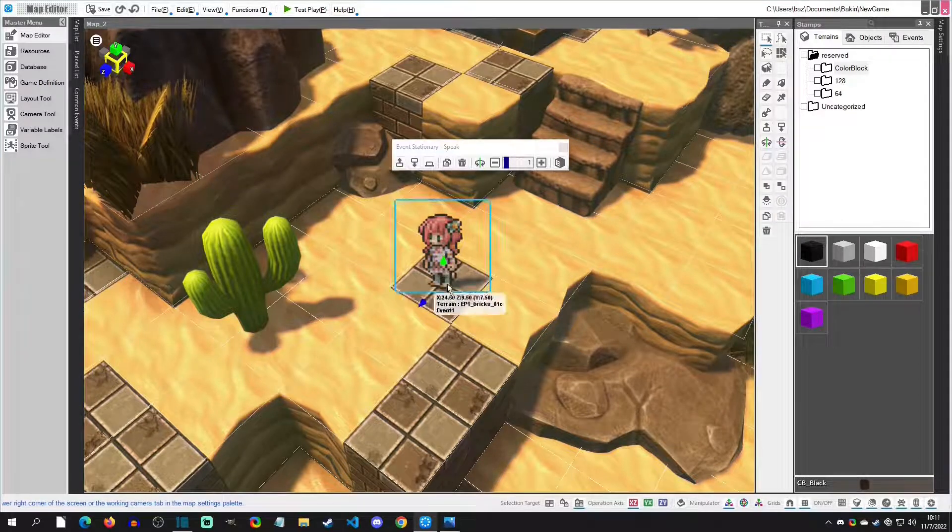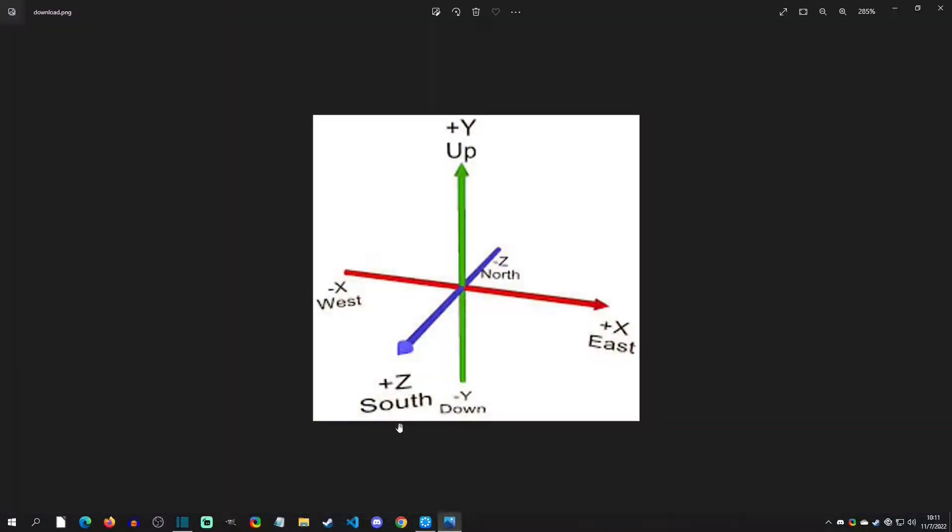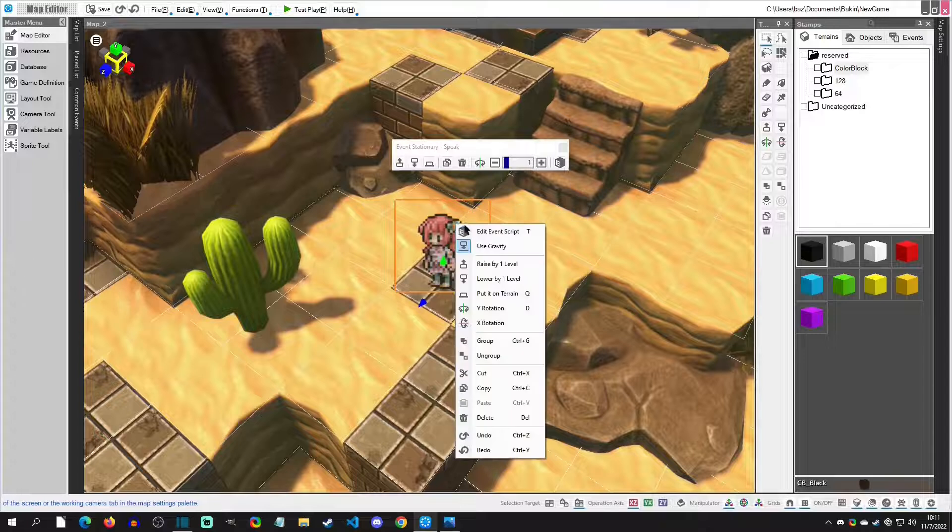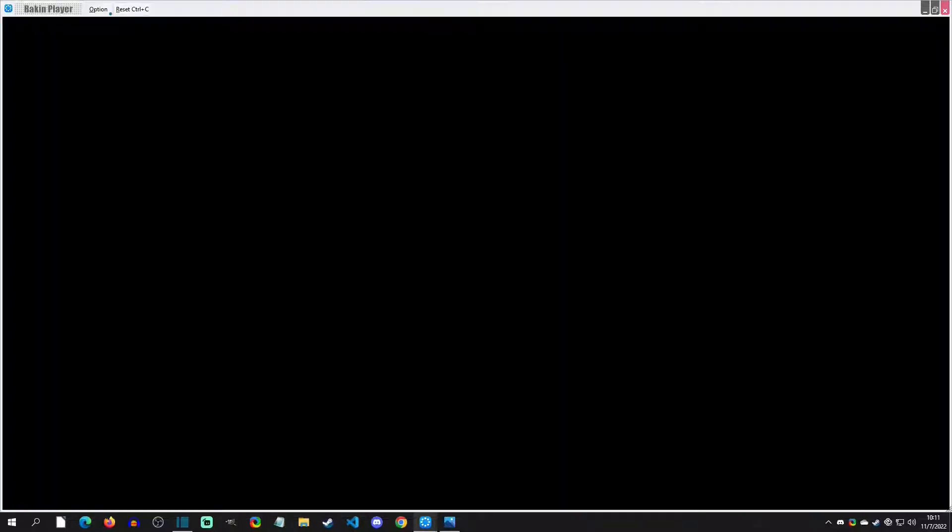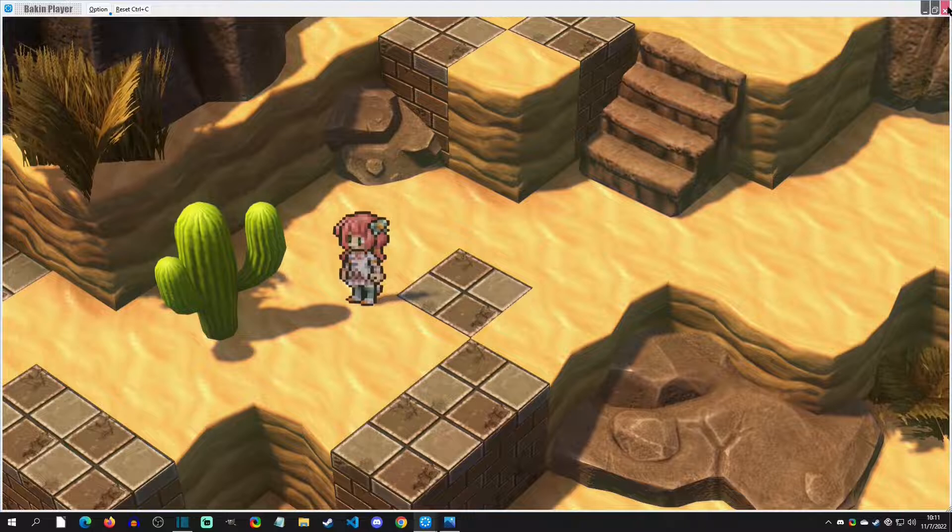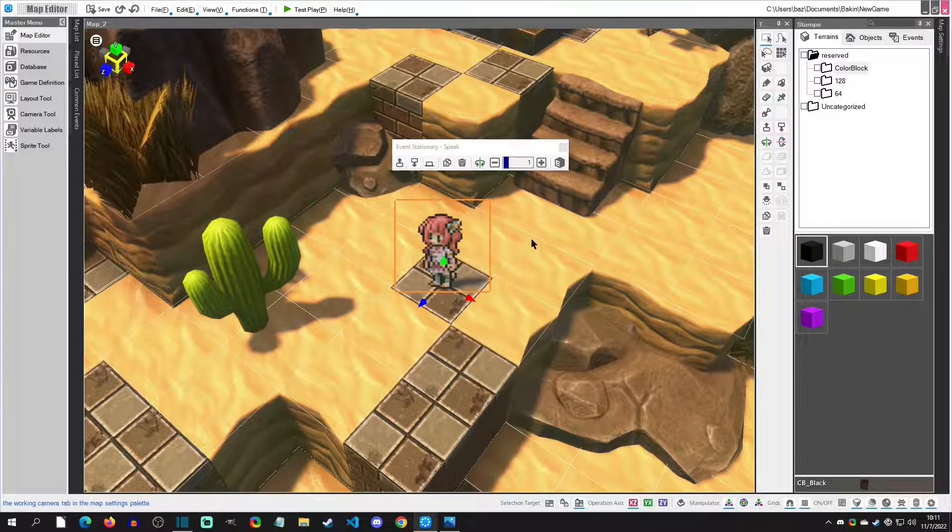One nice thing about moving with physics is that you can actually move in multi-direction. For instance, if we wanted to move say southwest, we could actually do that by applying a negative X and a positive Z. We could go into the event, add in a positive Z, and with that we should move in a southwest direction. There we go.